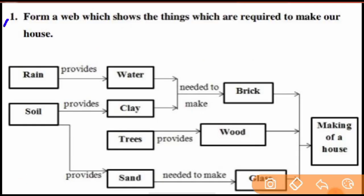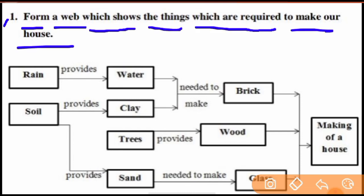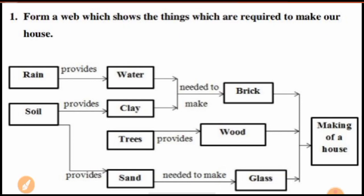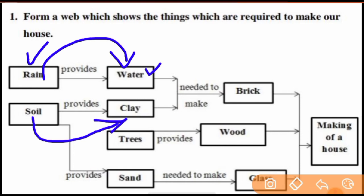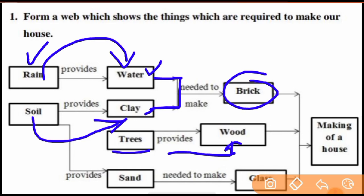Now there is one more question: form a wave which shows the things required to make a house. To make a house, first you need rain — rain provides water. Then soil provides clay. Water and clay together make bricks. Trees are also there — they provide wood.